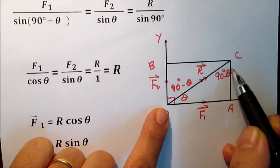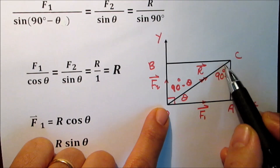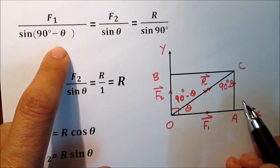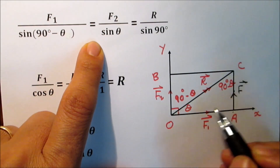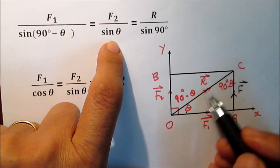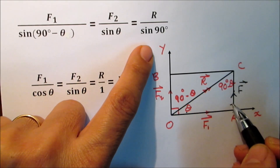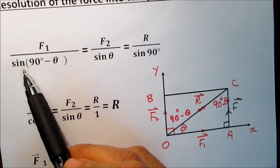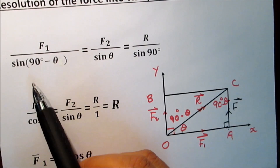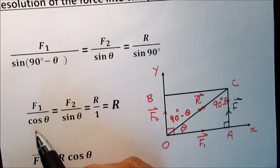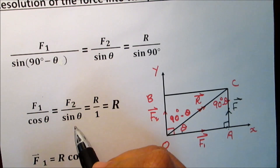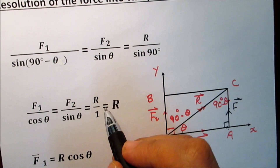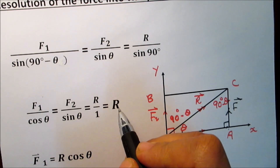F1 over sine of the opposite angle, which is 90 minus theta. So F1 over sine(90 minus theta) equals F2 over sine(theta). This equals R over sine of angle A, which is a right angle — 90 degrees. Simplifying: sine(90 minus theta) equals cosine(theta). So F1 over cosine(theta) equals F2 over sine(theta), which equals R over sine(90) — so this equals R.